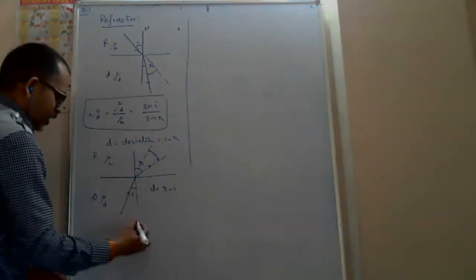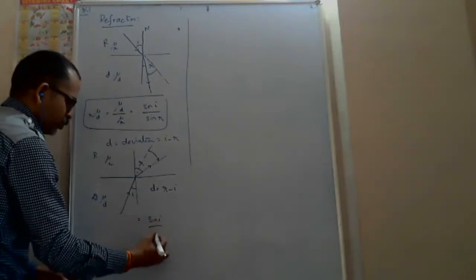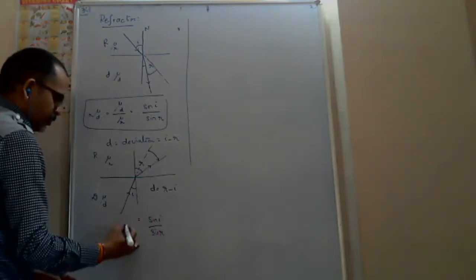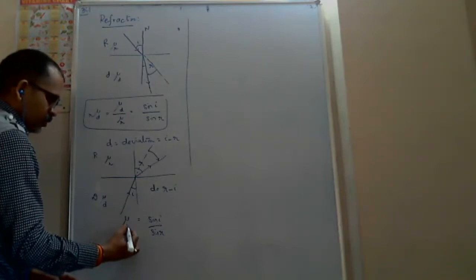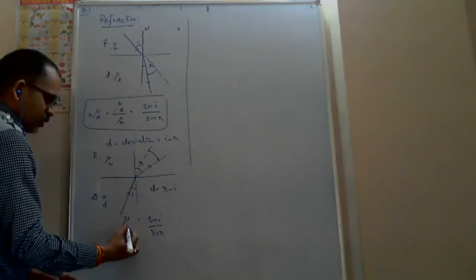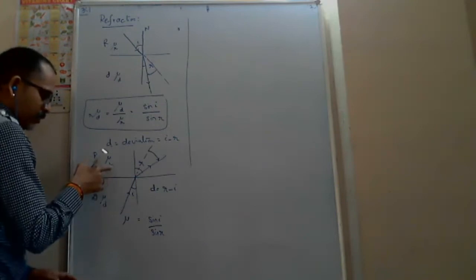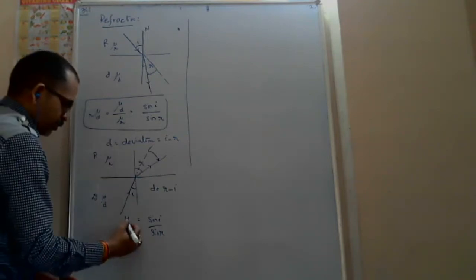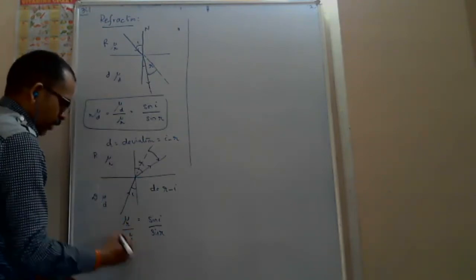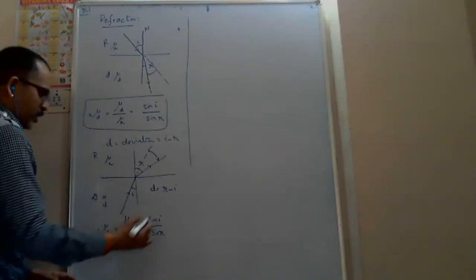And in this case, Snell's law gives sine i by sine r equals mu-D by mu-R. Light is coming from denser to rarer, so sine i by sine r equals mu-R by mu-D, which is mu-R with respect to denser.